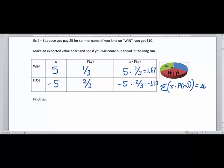Now if I add these together, because the sum would then be the total here, the $1.67 minus the $3.33 would give me negative 1.66. So what this means is that the expected value is losing, or negative, $1.66 per game.